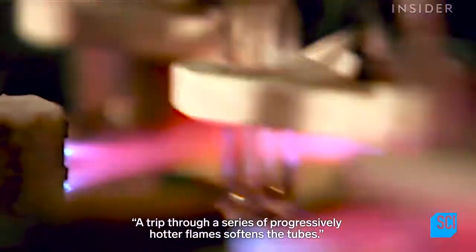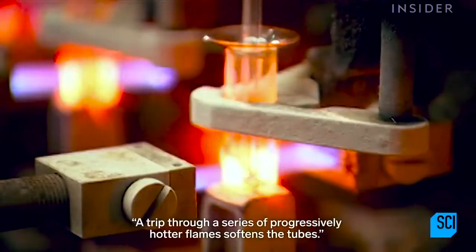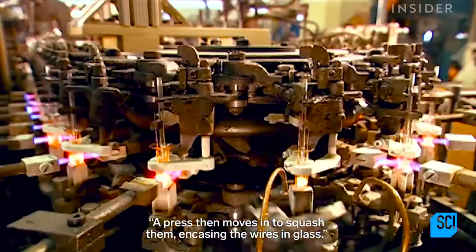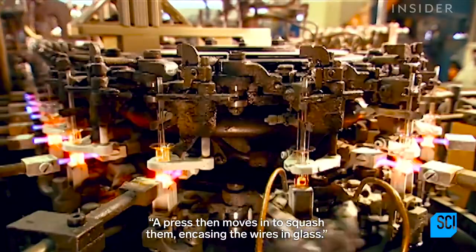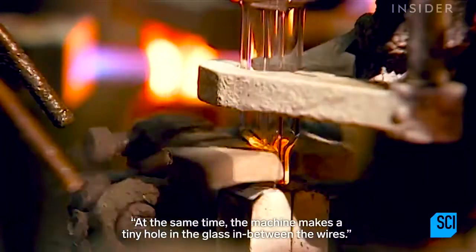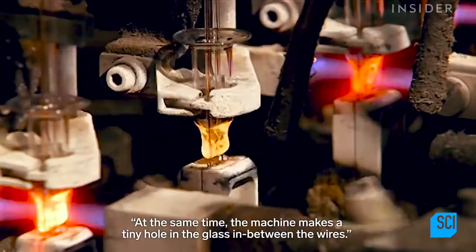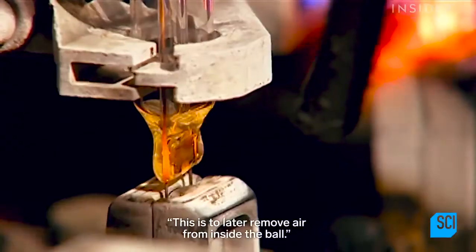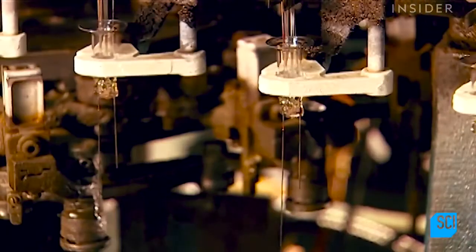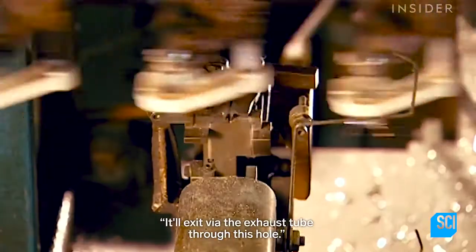A trip through a series of progressively hotter flames softens the tubes. A press then moves in to squash them, encasing the wires in glass. At the same time, the machine makes a tiny hole in the glass in between the wires. This is to later remove air from inside the bulb. It'll exit via the exhaust tube through this hole.